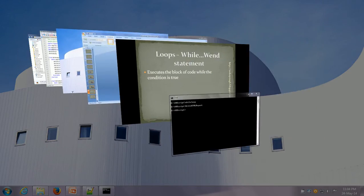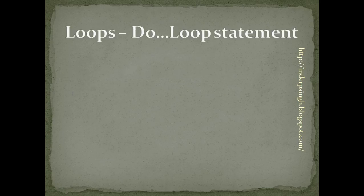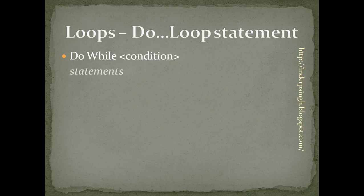Now, in the looping statements, so far we have seen for-next, for-each-next, and while-wend. Another powerful looping statement is the DO loop statement. The DO loop statement comes in two variations. In the first variation, we give the condition at the beginning — DO WHILE followed by a condition, then some statements, then the loop statement. It tests the condition at the beginning. If the condition is true, all the statements are executed. If the condition is false, nothing happens and it moves on to the statement after the loop statement.